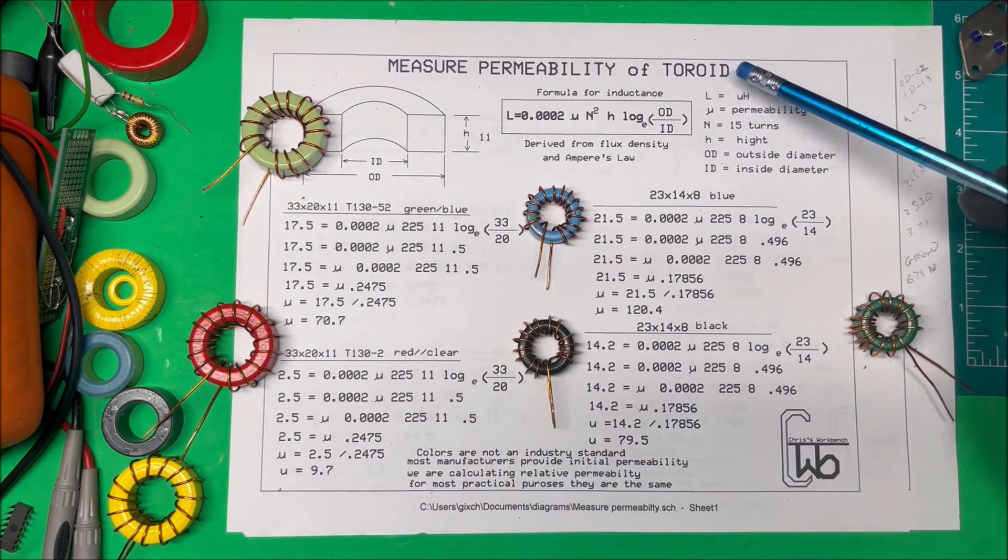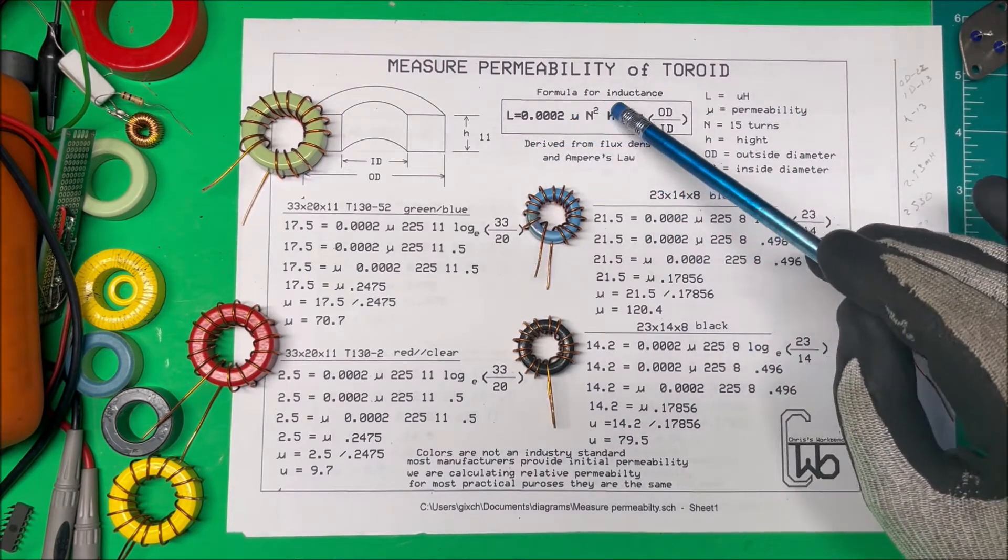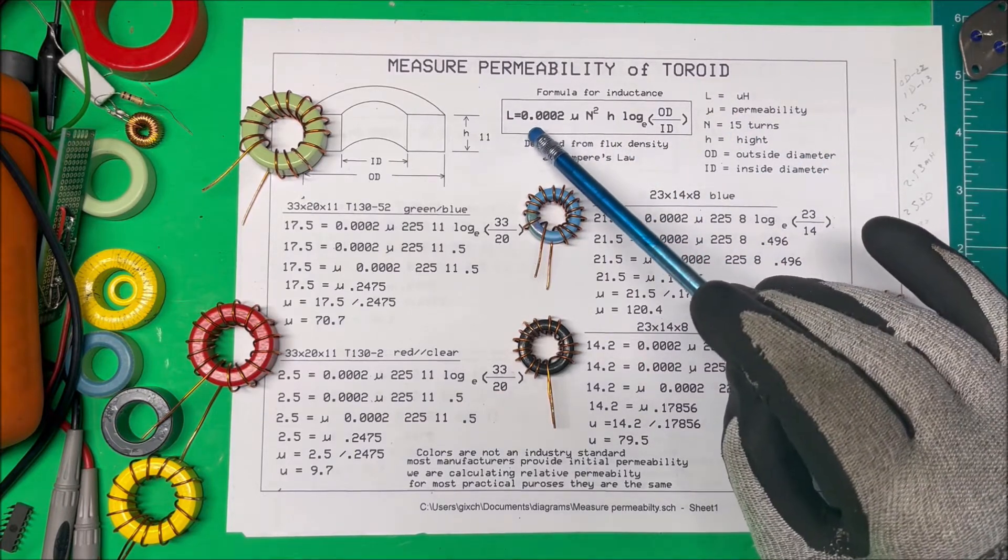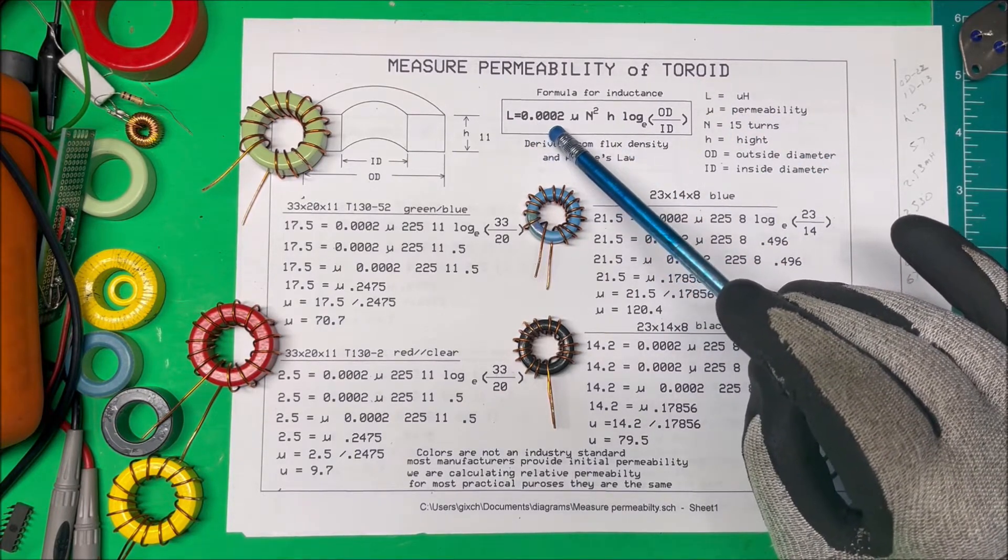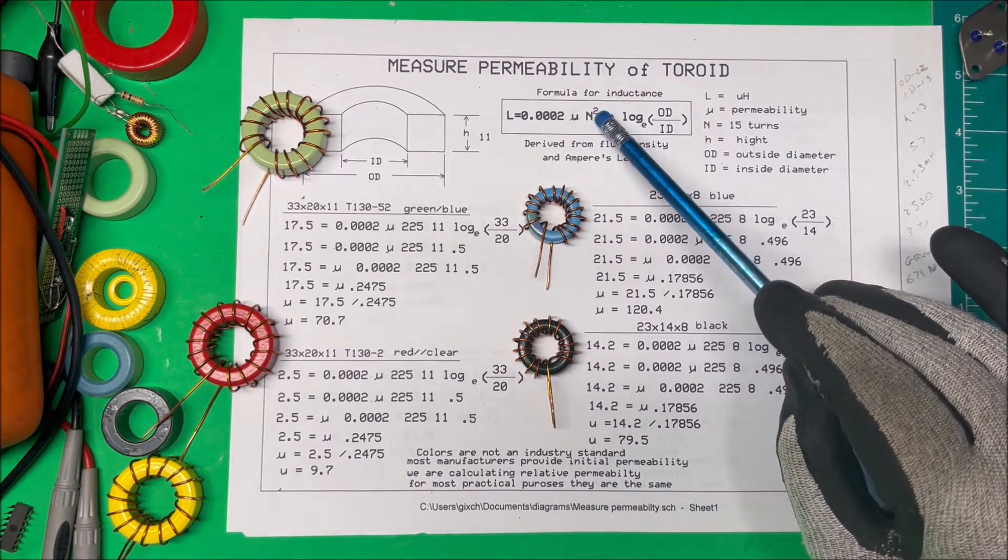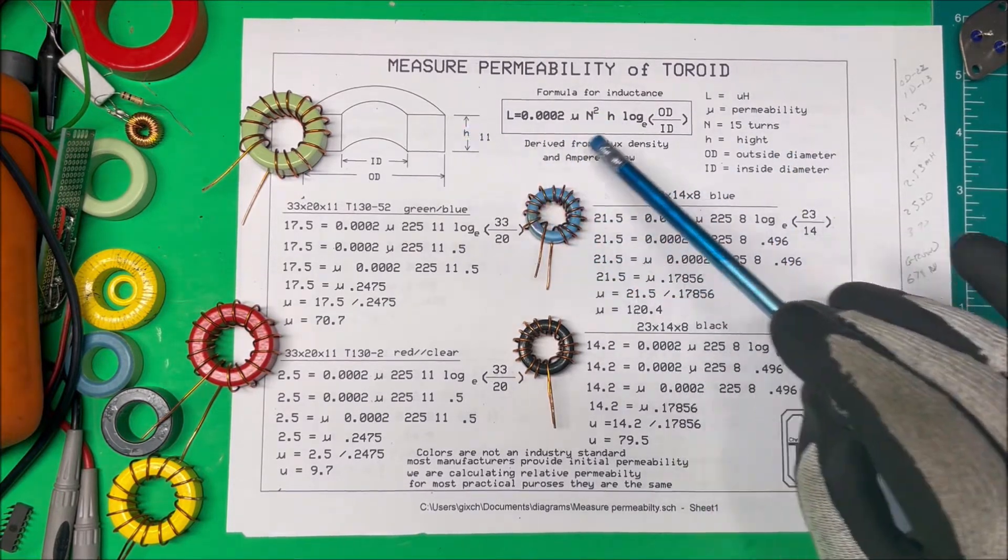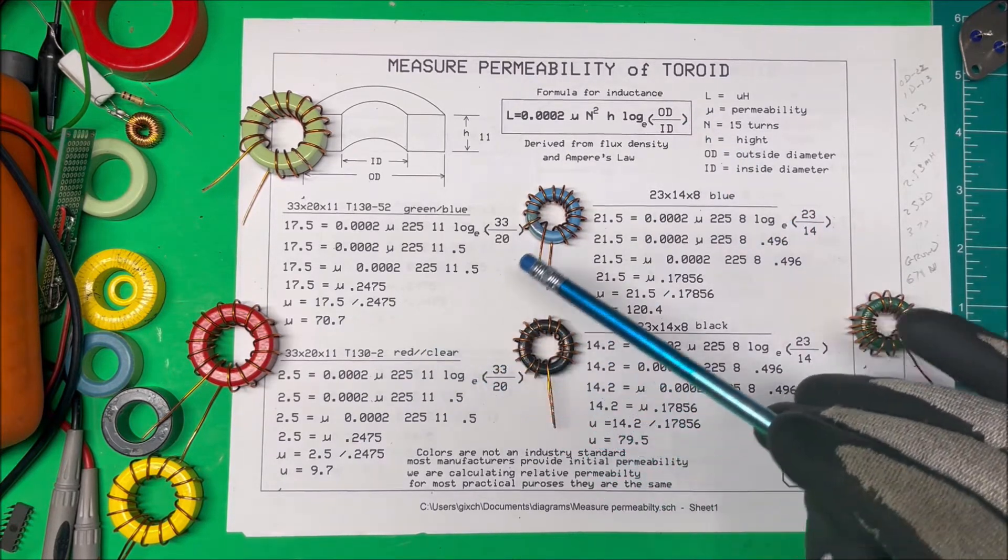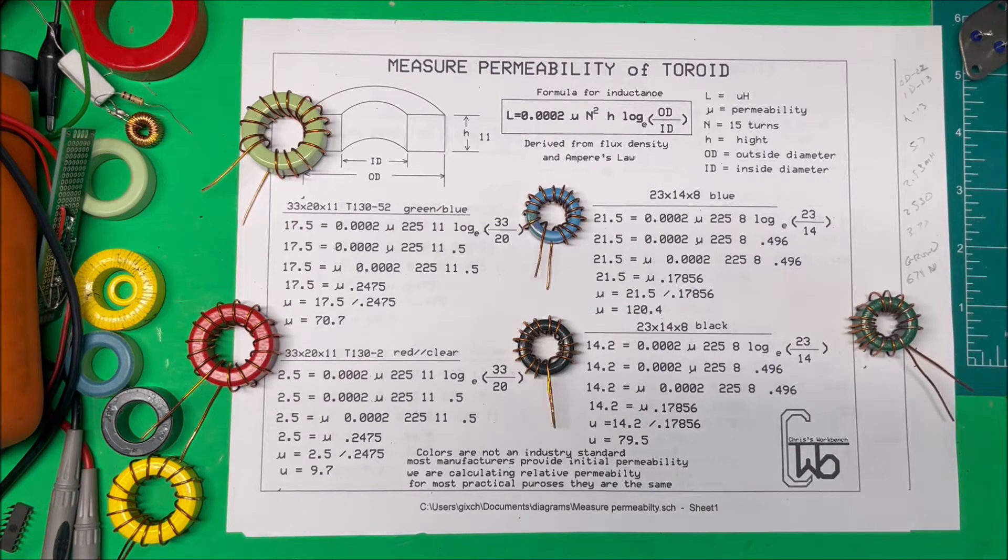Let's measure the permeability of a toroid. In order to do that, we're going to use this formula here for inductance where L is in micro-Henry's. That's going to be equal to 0.0002 times the permeability times the number of turns squared times the height, times log e of the outside diameter over the inside diameter.